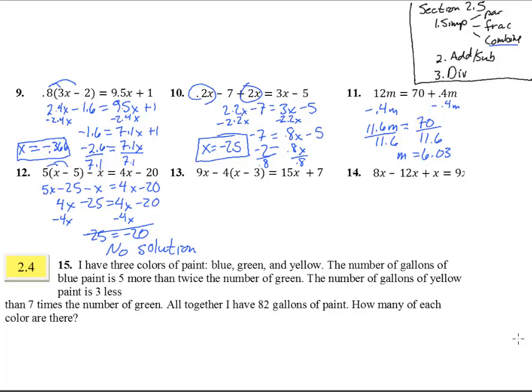All right. Number 13. Let's first get rid of any parentheses. So jump that through. So we have 9x minus 4x plus 12. Remember that's a plus because it's a minus 4 timesing in through a minus 3. Equals 15x plus 7. That's 5x plus 12 equals 15x plus 7. Now we combine both of these together. Subtract 5x. Just to get the x's all together. And we get 12 equals 10x plus 7. Subtract 7 and we get 10x equals 5. Divide both sides by 10. And we get x equals 5 over 10 or 1 half.